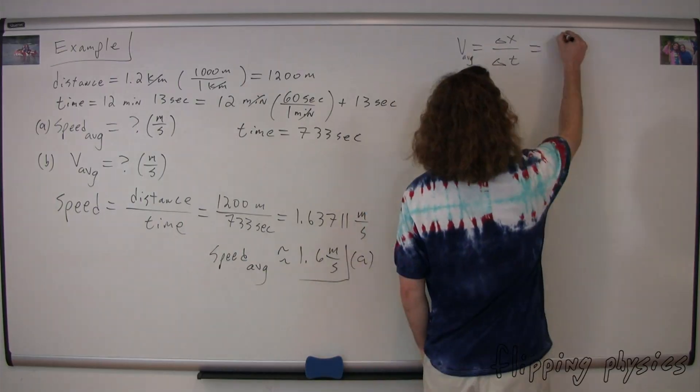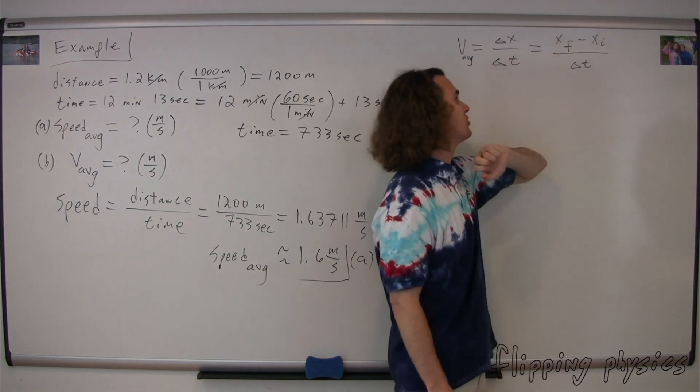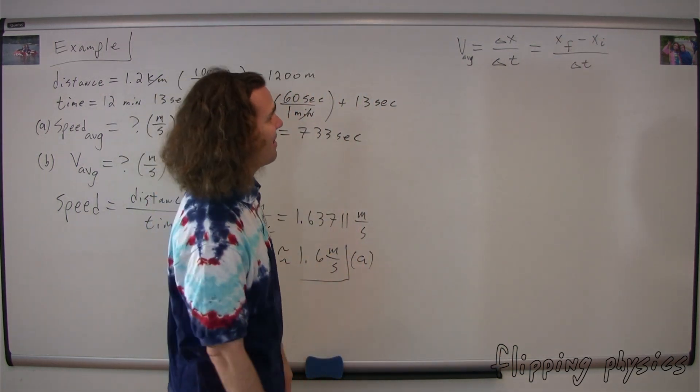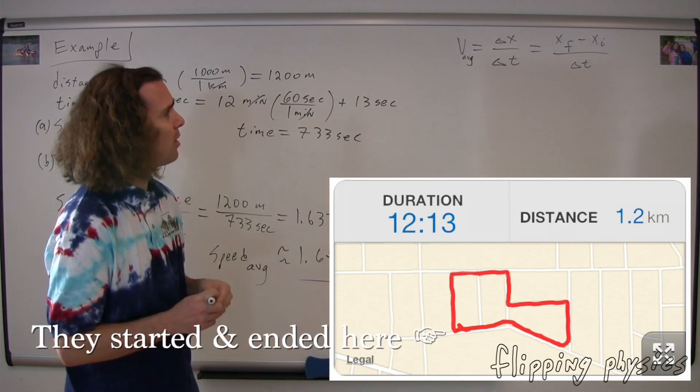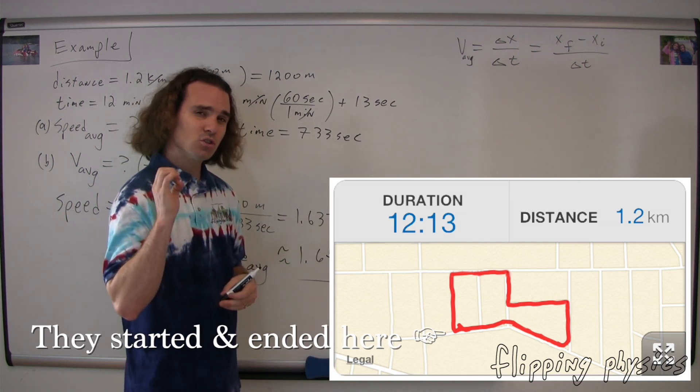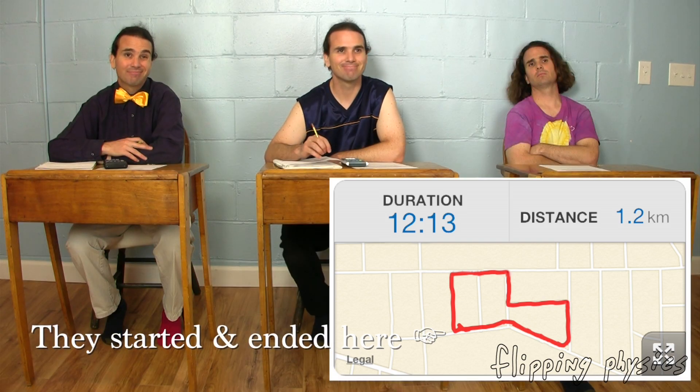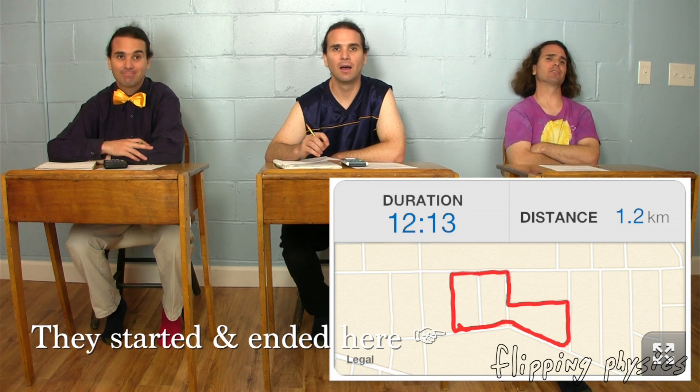Yes, another way of saying displacement is it is position final minus position initial. So, Billy, what do we get then for position final minus position initial? What is the displacement? Buster and Mr. Palmer went for a walk but what was their total displacement? In other words, what was the straight line distance from where they started to where they ended? Zero. They started and ended in the same spot so their total displacement is zero. That makes their average velocity also equal to zero.